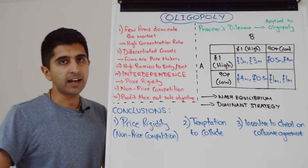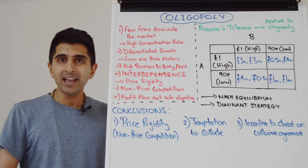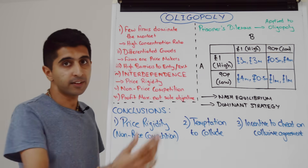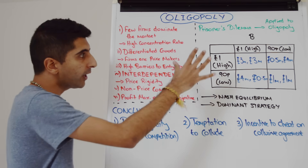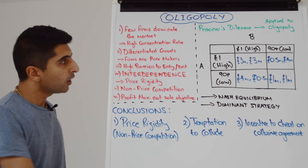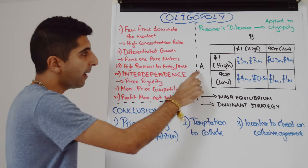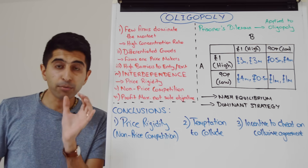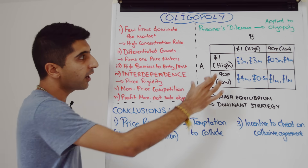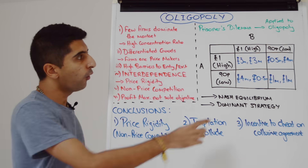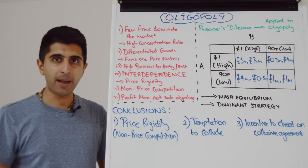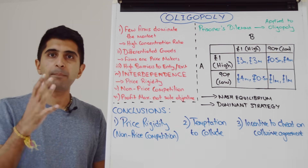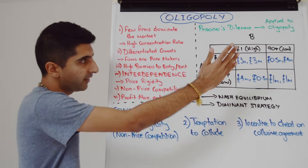We could argue that an oligopolistic market is like a prisoner's dilemma game, and if we apply the prisoner's dilemma game to oligopoly, we'll get to a situation like this. We have two firms, firm A and firm B, and each firm is facing the same pricing decisions — whether to charge a high price of £1 or whether to charge a low price of 90 pence. I've put in their payoffs, their profits, depending on the options that they pick into the table.